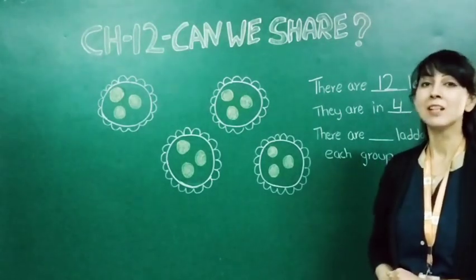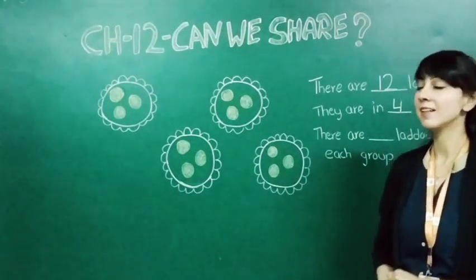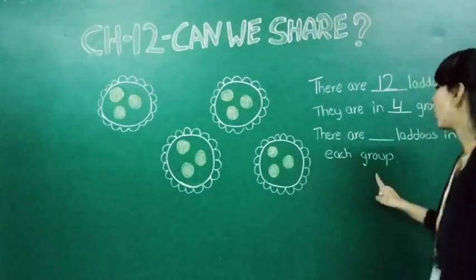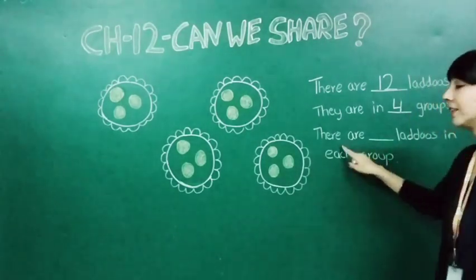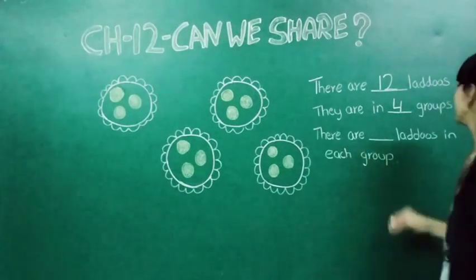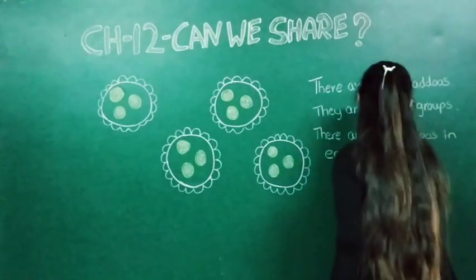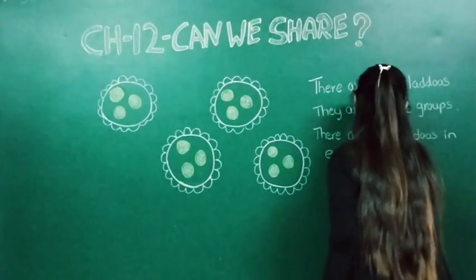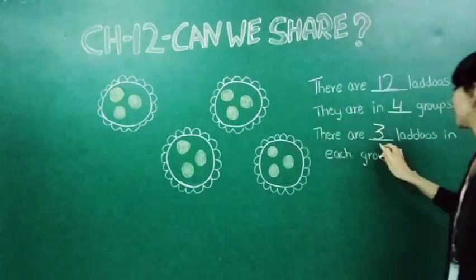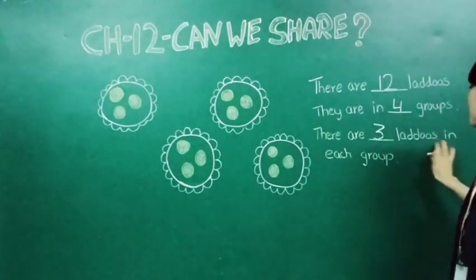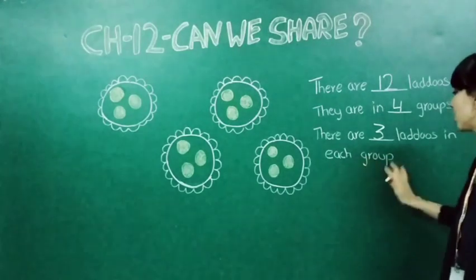Three ladoos in one plate, three ladoos in another plate, three ladoos again in the third plate, and three ladoos in the fourth plate. Means you can see equal number of ladoos are divided into four groups. So here what will come? There are three ladoos in each group.